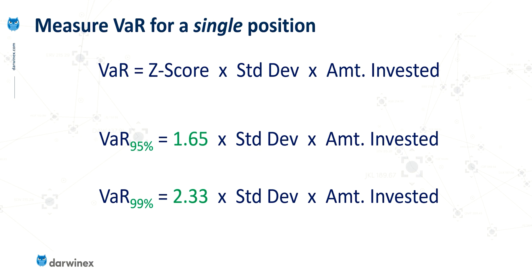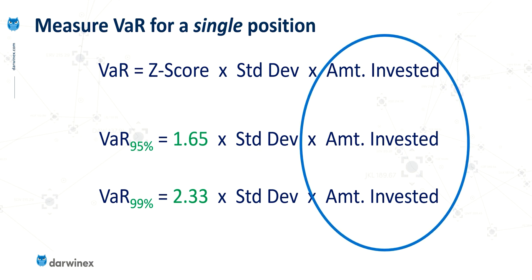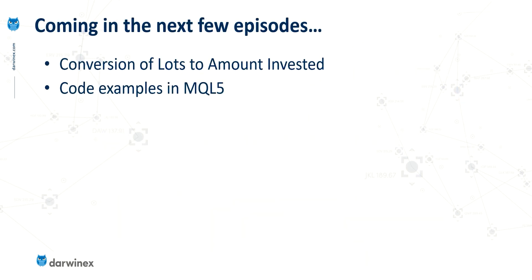We now have two components of this formula. The only one we don't have yet is the amount invested. There's a slight adaptation needed if you're trading on an account that uses lots instead of actual investment amounts. It's that conversion of lots to the amount invested that I'll be covering in the next episode. Once that's done, we'll be in a position to start coding this up in MQL5 to automatically calculate the value-at-risk for us.